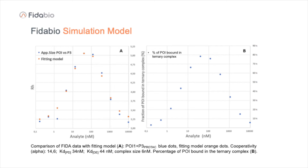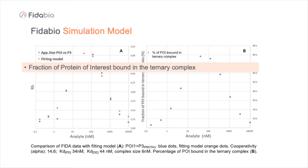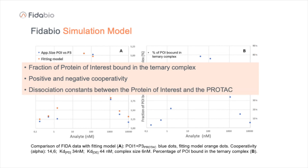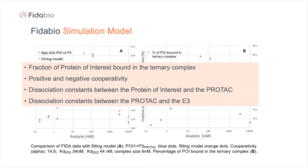By knowing the hydrodynamic radius of these components, we can calculate: the fraction of protein of interest bound in the ternary complex, positive and negative cooperativity, dissociation constants between the protein of interest and the PROTAC, dissociation constants between the PROTAC and the E3, and the size of the ternary complex. As we have shown, the FIDA-1 sets new standards for characterization of PROTACs and the formation of ternary complexes, allowing you to select the best PROTACs for development.